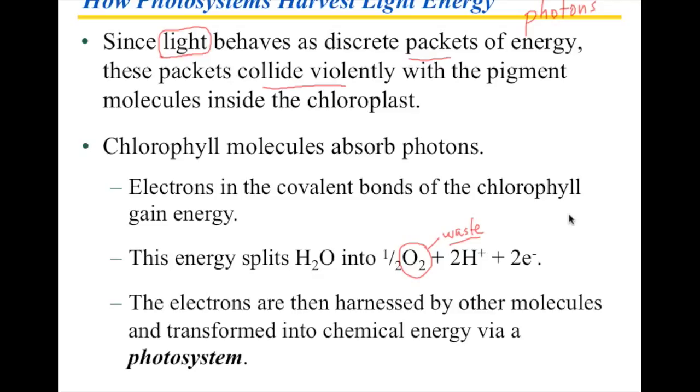The second thing that happens is that the energy that's imparted to the covalent bonds of the chlorophyll are able to be transferred. And as they get transferred, they're going to be transferred as chemical energy into a photosystem. The term photosystem is something that I should explain because you're not familiar with that term. You are familiar with this term.